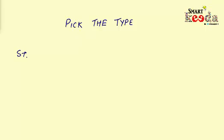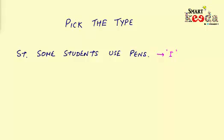Here is the first statement: 'Some students use pens.' Are you able to recognize the type of the sentence? Yes, it's an I type statement. As you can see, the sentence is starting with the word 'some' and it has no negative inferences in it, so it will be an I type statement.